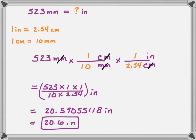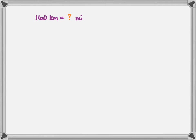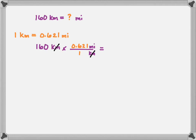Let's do one more example: 160 kilometers is equal to how many miles? Looking up the conversion factor, the book tells me 1 kilometer is equal to 0.621 miles. I set up my equation putting kilometers on the bottom so they cancel with the kilometers of the 160, and miles on top as my remaining unit. I plug in the conversion factors: 1 kilometer equals 0.621 miles, so I put 0.621 on top and 1 on the bottom. Canceling out the kilometers, I am left with miles.